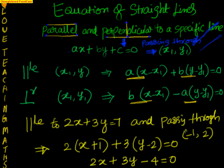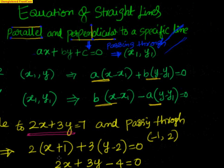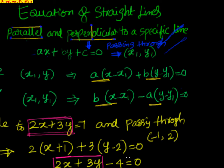Cross-checking by substituting minus 1 comma 2: 2 into minus 1 is minus 2, plus 3 into 2 is 6; 6 minus 2 is 4, minus 4 is 0. Correct. Also observe that the parallel line retains 2x plus 3y — only the constant term changes depending on the point through which the line passes.